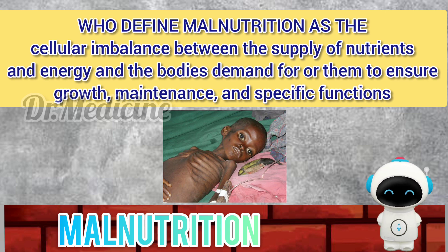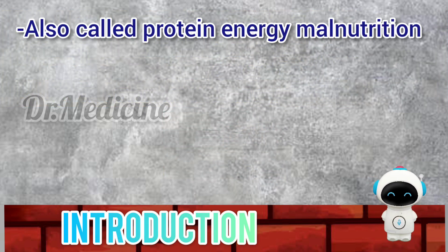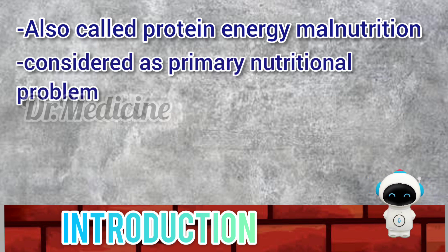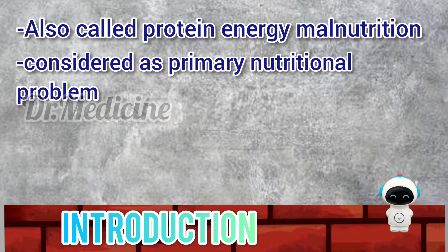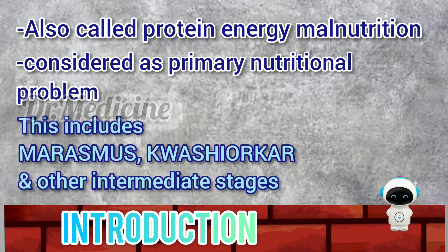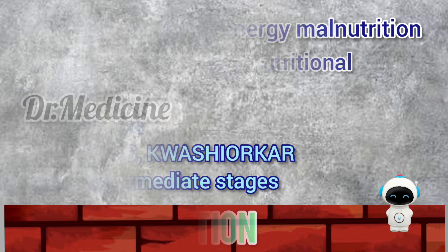Protein calorie malnutrition is also referred to as protein energy malnutrition. It is considered the primary nutritional problem in India, also called the first national nutritional disorder. The term PEM applies to a group of related disorders that include marasmus, kwashiorkor and intermediate stages.